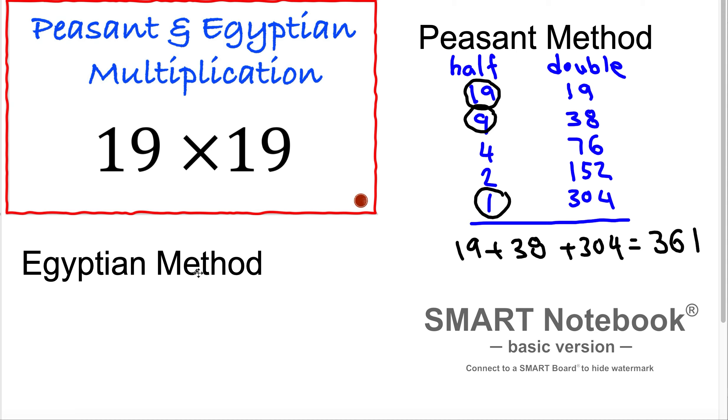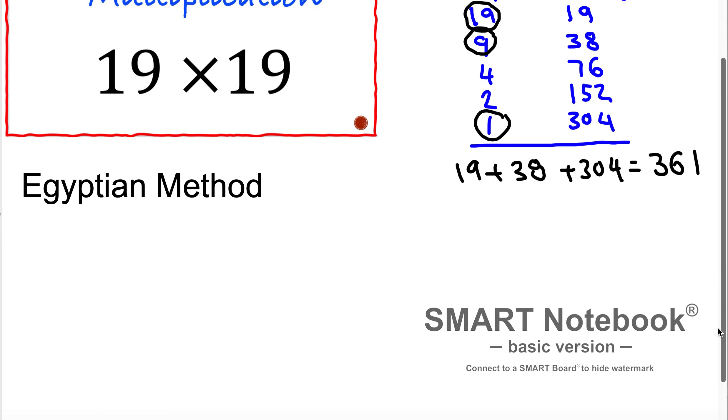So now let's go and see how we can multiply 19 times 19 with the Egyptian method. But here we start with 1 and on the other side with 19.